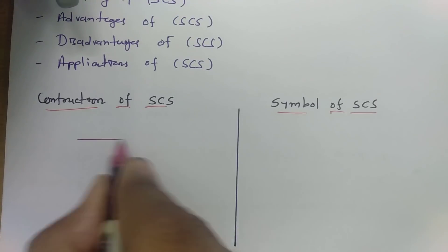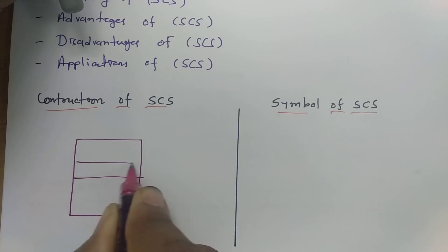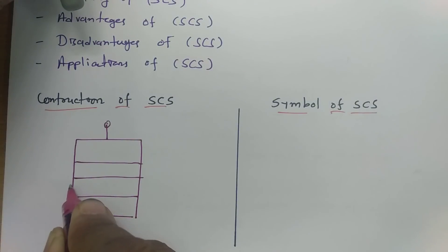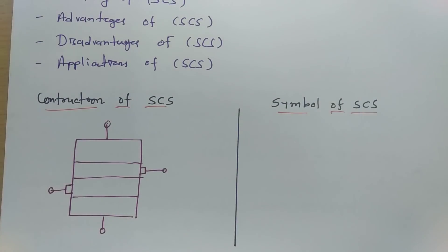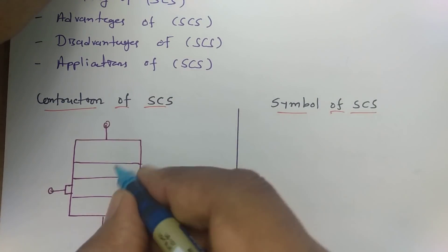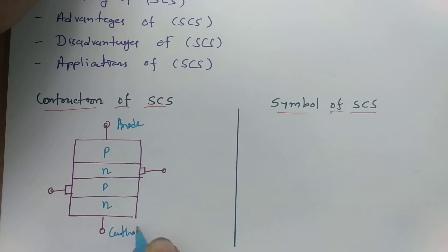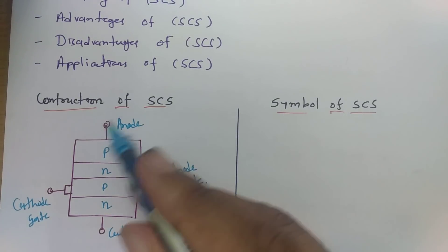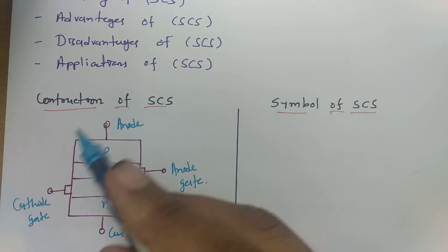The construction of the Silicon Controlled Switch is basically almost identical to the SCR, but with a minor difference. The Silicon Controlled Switch is a four-layer device — P, N, P, N — with four terminals: anode, cathode, cathode gate, and anode gate. It is a four-layer, three-junction, four-terminal device.